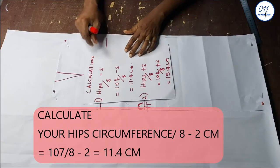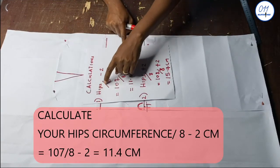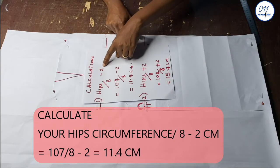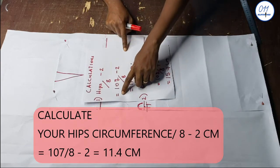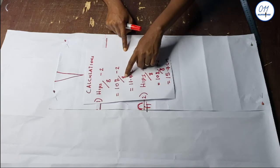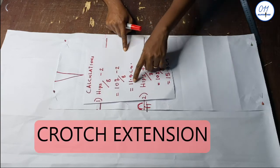I will now calculate my hip measurement divided by 8 minus 2 centimeters, which is 108 over 8 minus 2, which gave me 11.4 centimeters. This value is the crotch extension.